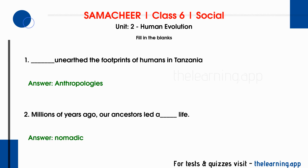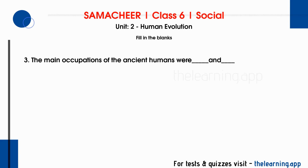Nomadic life — because of the nomadic lifestyle, early humans moved from place to place. That is the nomadic life. Third question: The main occupations of the ancient humans were dash and dash. The correct answer is hunting and gathering. The main occupation of ancient humans was hunting and gathering.